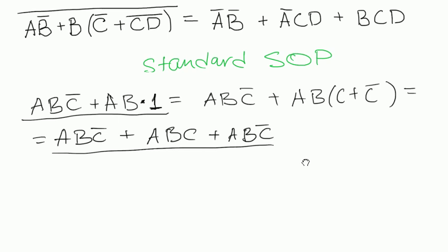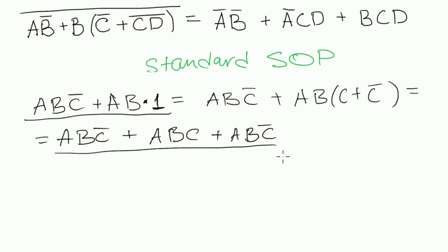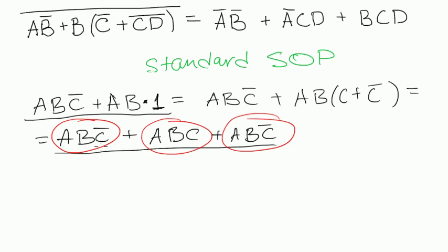Now we've turned this expression from sum of products form into standard sum of products form. Because now in every term — this one, this one, and this one — we have all three variables that appeared in the initial expression. They are equal to each other, of course. But you may say: why did we do that? We just made the expression more complicated — it looked much simpler before.